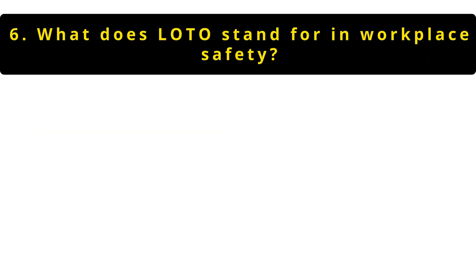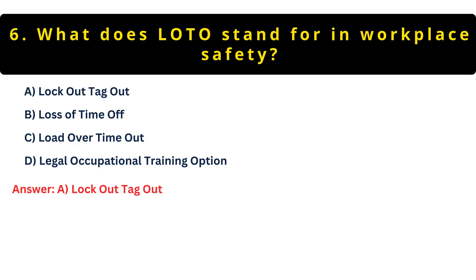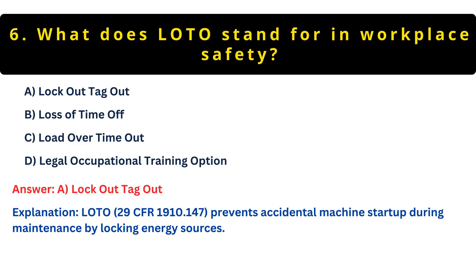Question 6: What does LOTO stand for in workplace safety? Option A: Lockout tagout. Option B: Loss of time off. Option C: Load over timeout. Option D: Legal occupational training. The correct answer is A — Lockout tagout. LOTO procedures, required under OSHA's 29 CFR 1910.147, ensure dangerous machinery stays powered down during maintenance. Workers use physical locks and tags to prevent accidental startups that could cause serious injuries.